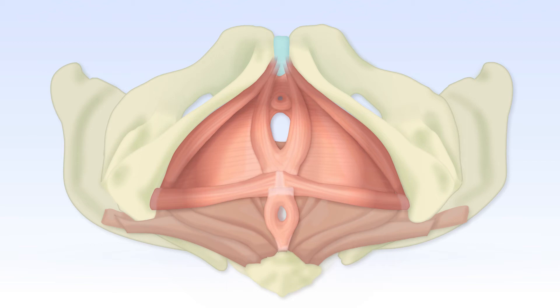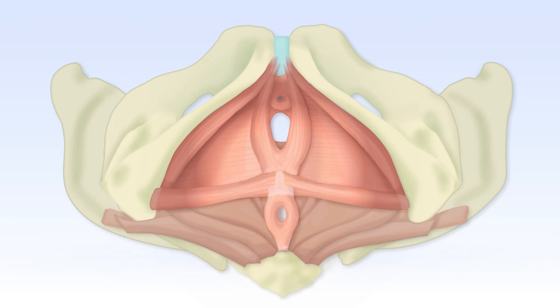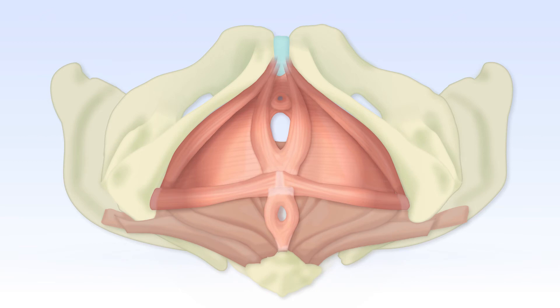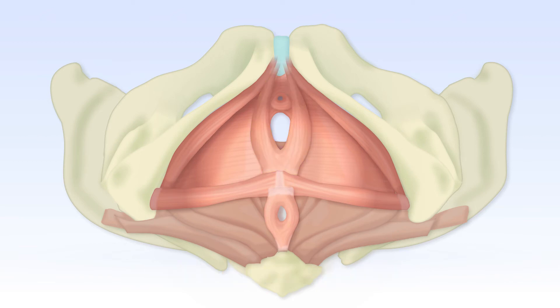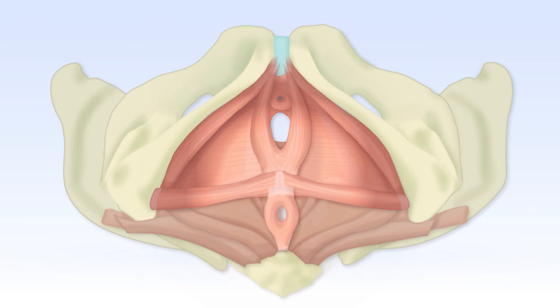The superficial layer consists of the superficial transverse perineal muscle, the external anal sphincter contributing to anal closure, and bulbospongiosus and ischiocavernosus, both playing an important role in female and male sexuality.